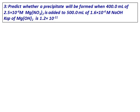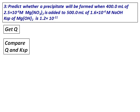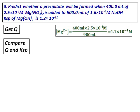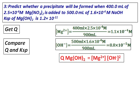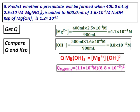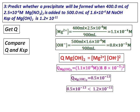Predict whether a precipitate will be formed when 400 mL of 2.5×10⁻⁴ molar magnesium nitrate is added to 500 mL of 1.6×10⁻⁴ molar sodium hydroxide. The Ksp of magnesium hydroxide is given. To start with, get the value of Q and compare it with Ksp. Get the concentrations of magnesium ions and hydroxide ions, remembering to take the total volume as 900 mL. Substituting into the Q expression for magnesium hydroxide gives Q = 8.5×10⁻¹³. Comparing with the Ksp of magnesium hydroxide, Q is less than Ksp, and hence there will not be any precipitate.